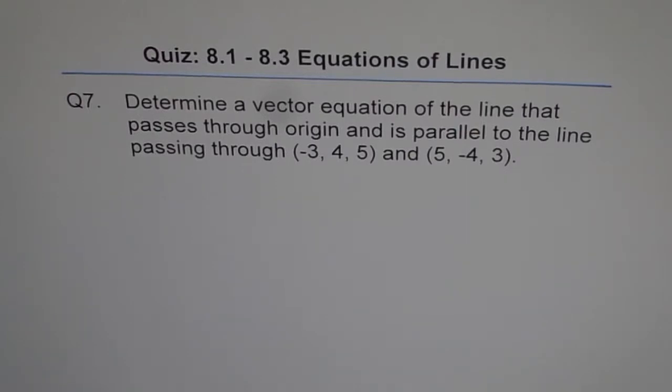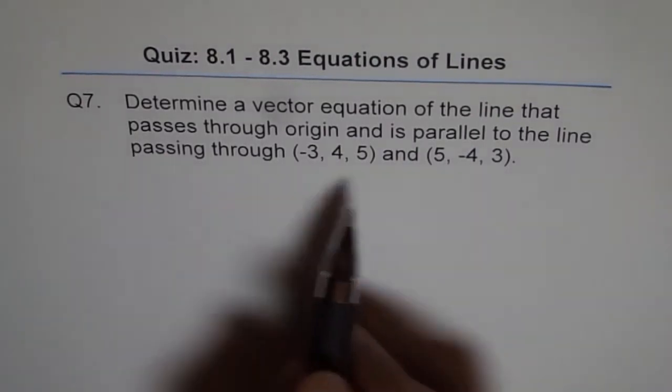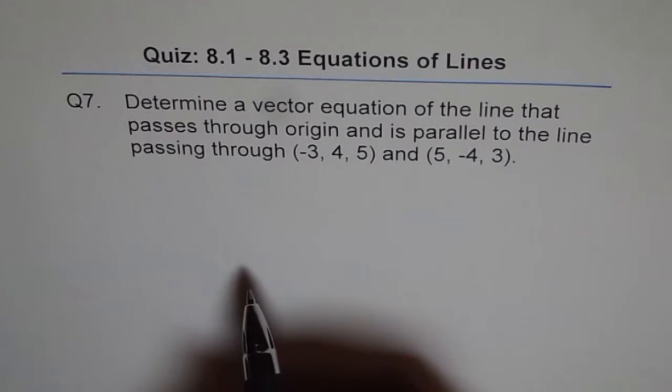Question 7. Determine a vector equation of the line that passes through origin and is parallel to the line passing through these two points. So parallel lines will have the same slope or direction vector.